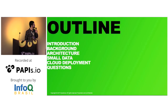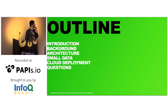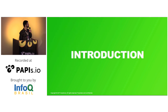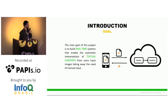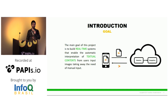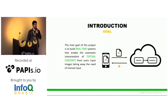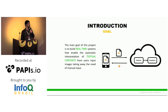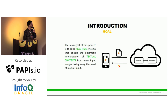This is our outline today: introduction, a brief background, some of our architecture, the problem of small data, and deployment. The goal of this project is to automate the process of getting information from documents, so the user has no need to input the information — you extract it directly from the document, and we developed a solution to achieve this.